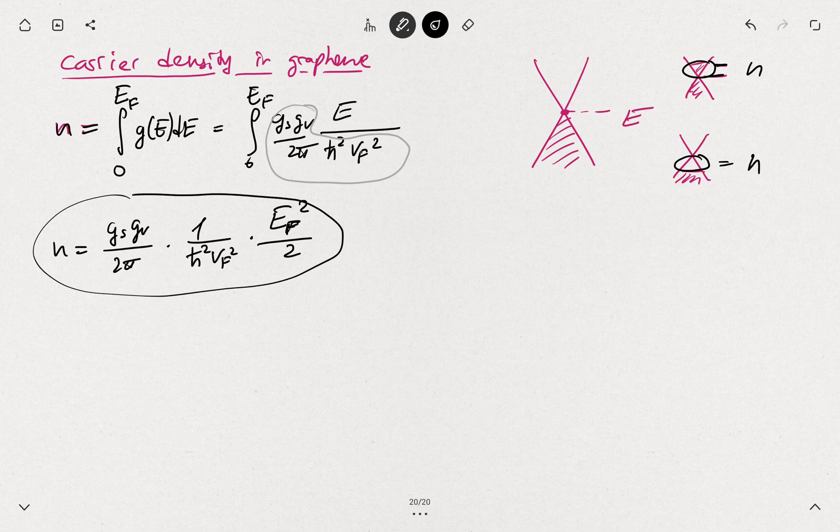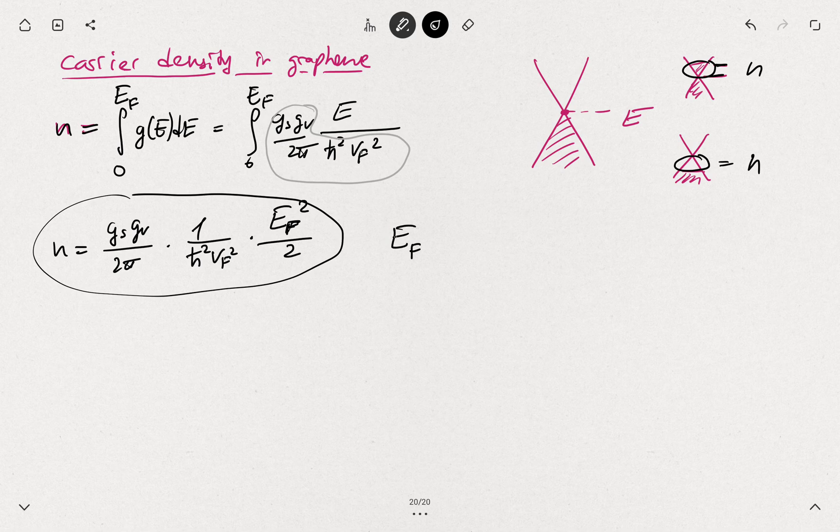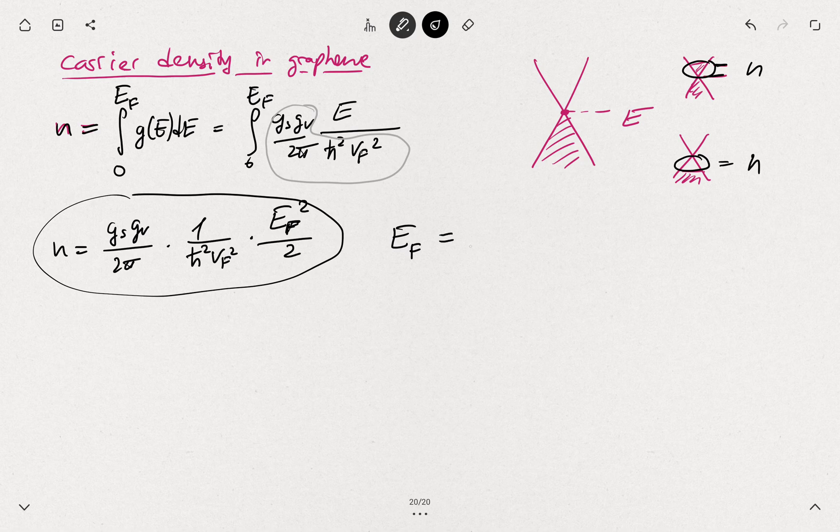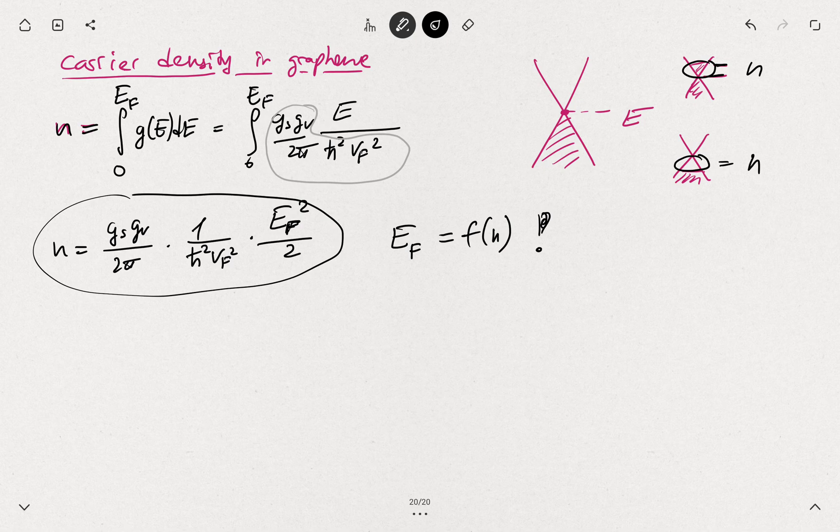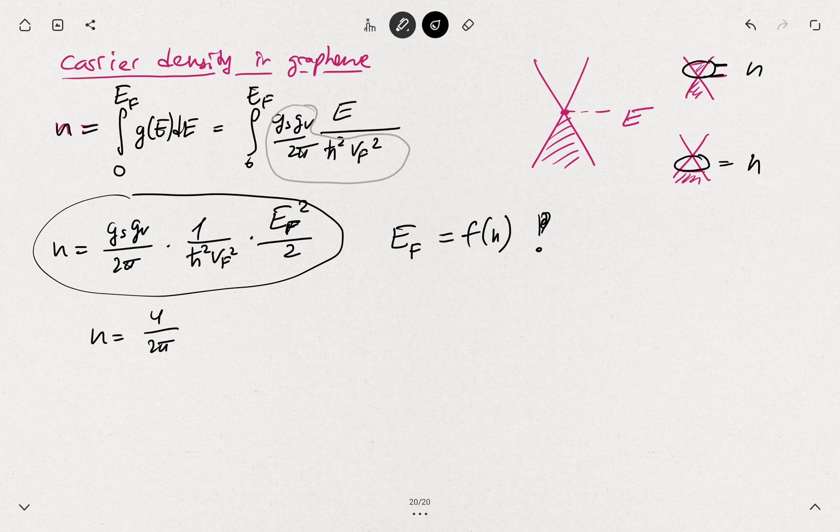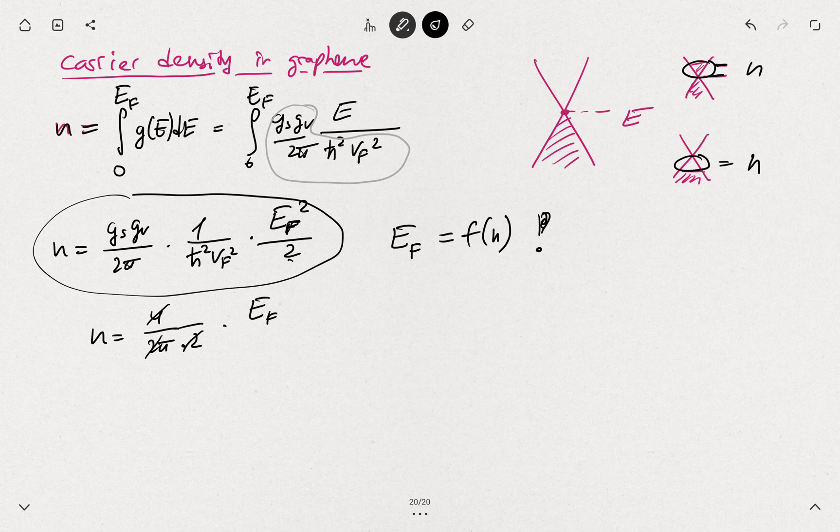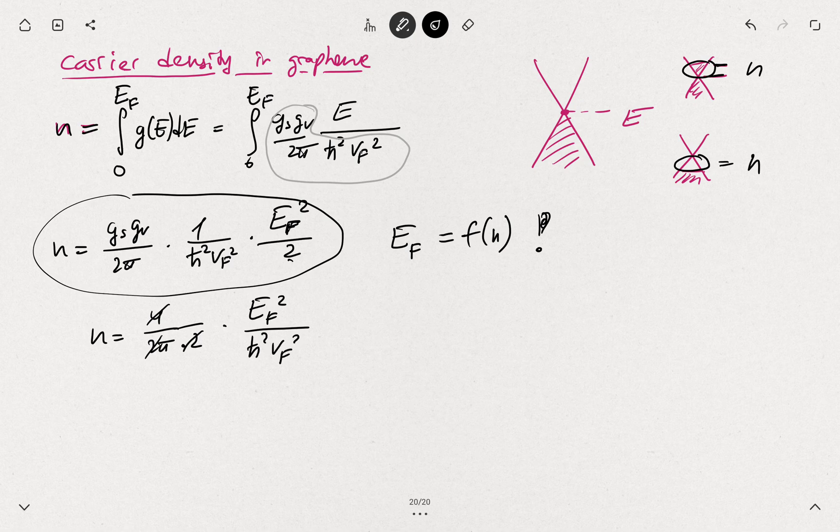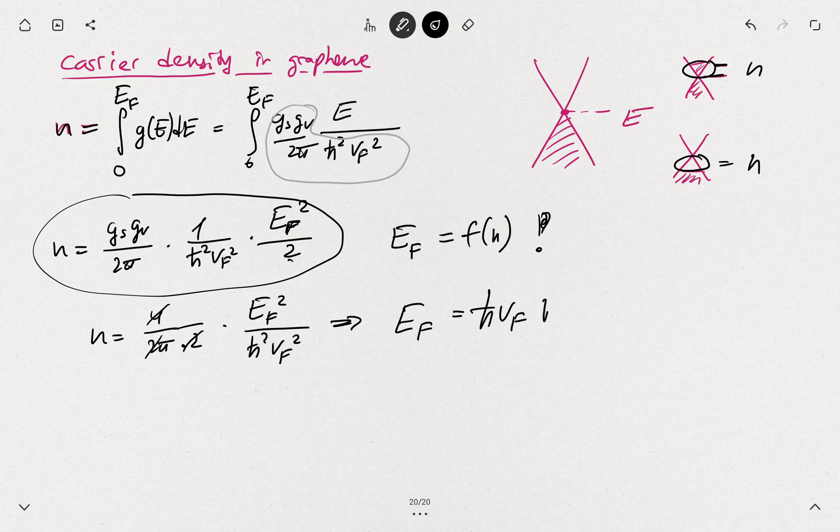And this is a pretty surprising result. The Fermi level of graphene is a function of carrier density. You can actually express this. So n equals, g-spin g-valley is 4 divided by 2π times 2, so all these 4's cancel, times Ef squared over h-bar squared vf squared. So this means that the Fermi level is h-bar vf times square root of π n. You need to have modules and then the sign times the sign of n to have a correct expression.